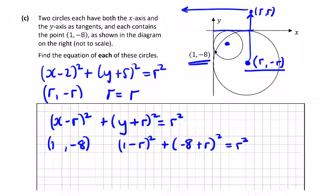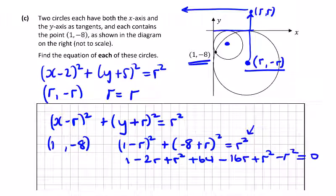So we're going to get 1 minus 2r plus r squared, then we have plus 64 minus 8r twice, minus 16r plus r squared, and then I'll bring this r squared to the left, minus r squared equals 0.